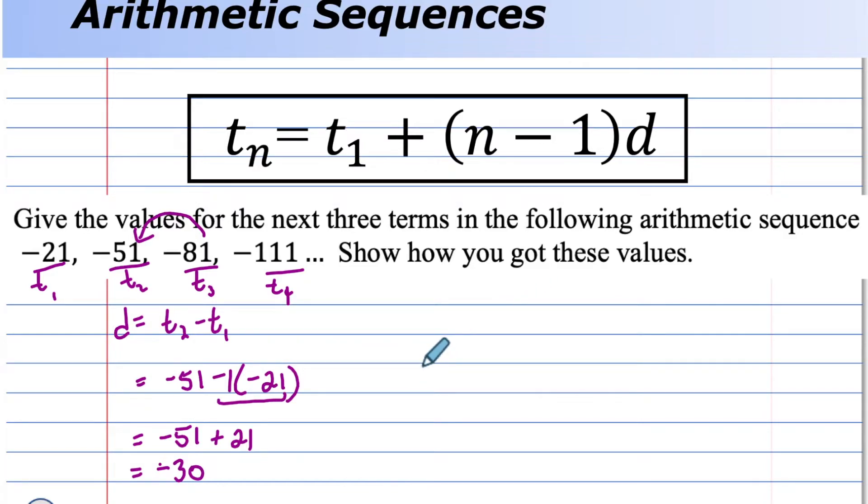And now, from your negative 111, you're asked to find three more values. So each jump, you're going to add negative 30. So if you add negative 30, you get negative 141. You're adding negative 30, or really, you can say you're combining a negative 30 with the negative 141 to get the negative 171.